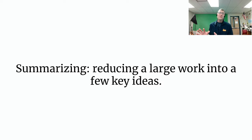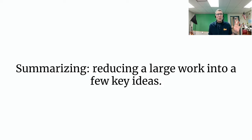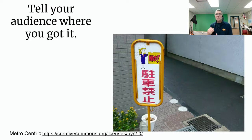The final way to use information is summarizing, and that's where we reduce a large work into a few key ideas. You might take a book and just say what the main ideas in it were. That's a little easier to do, although it takes a lot more reading to read an entire book. Just make sure, whether you quote, paraphrase, or summarize, that you tell your audience where you got your information from.